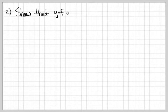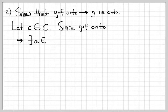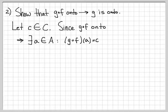Let's do another proof: let's show that g composed of f being onto implies that g itself is onto. We'll work with the definition of onto. Let c be an element of C. Since g∘f is onto, there must exist some a in A such that g(f(a)) = c. Note that g∘f is a function from A to C: I start with an element of A, f maps it to an element of B, then g maps that to an element of C. That's just the definition of an onto function.